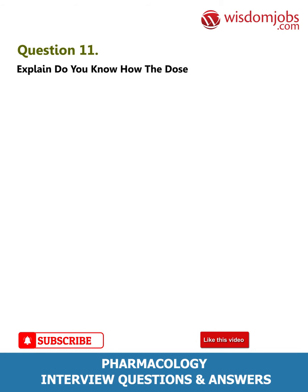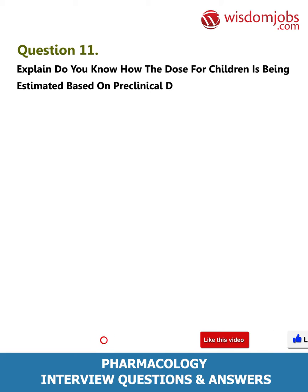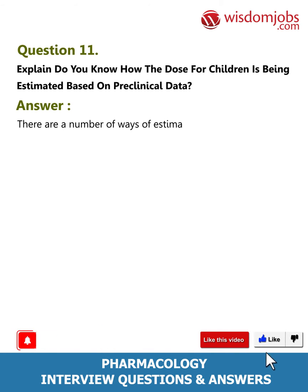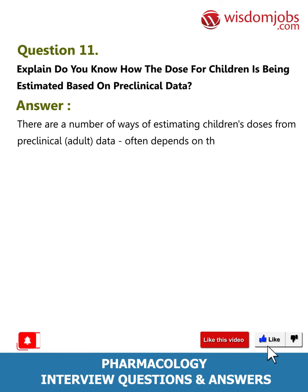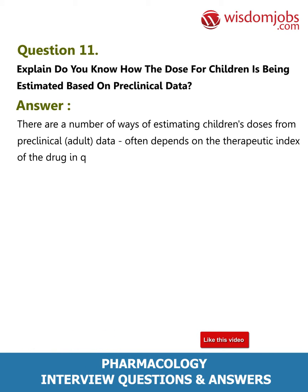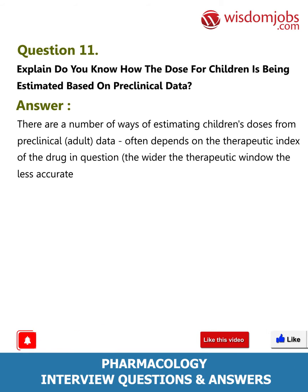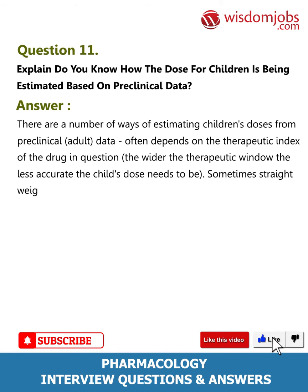Question 11: How is the dose for children estimated based on preclinical data? Answer: There are a number of ways of estimating children's doses from preclinical adult data. It often depends on the therapeutic index of the drug — the wider the therapeutic window, the less accurate the child's dose needs to be.